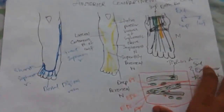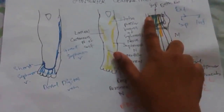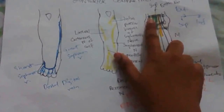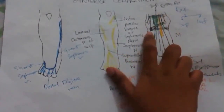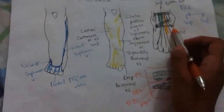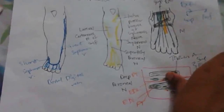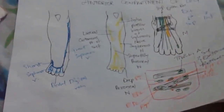To summarize: the superior extensor retinaculum is attached to the lower borders of the anterior surfaces of the tibia and fibula. The inferior extensor retinaculum — the stem is attached to the calcaneum bone, the upper band is attached to the medial malleolus, and the lower band is attached to the deep fascia. This is the anterior compartment of the leg with its bands. The division of the anterior compartment will be covered in the next lecture.